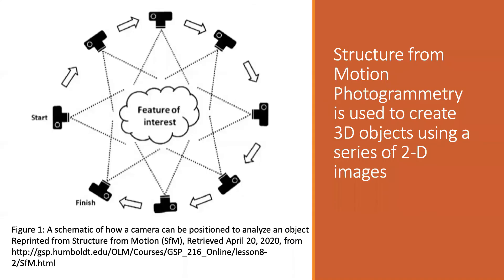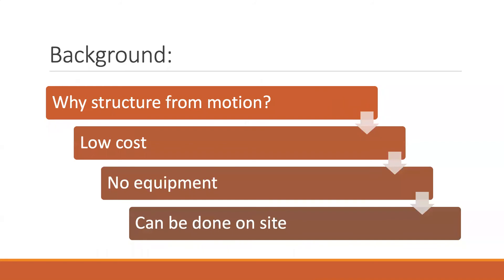Structure from motion is a process of creating 3D objects using a series of 2D images that overlap with one another and are acquired from multiple viewpoints. Multiple views of the object are captured with a camera in a range of various positions as seen in the figure. Common feature points are identified among the image set in order to establish a spatial relationship between the original image locations into a 3D coordinate system. This technique produces a dense point cloud-based model which is intensified using multi-view stereo. The structure from motion technique offers the possibility of fast, automated, and low-cost acquisition of 3D data.